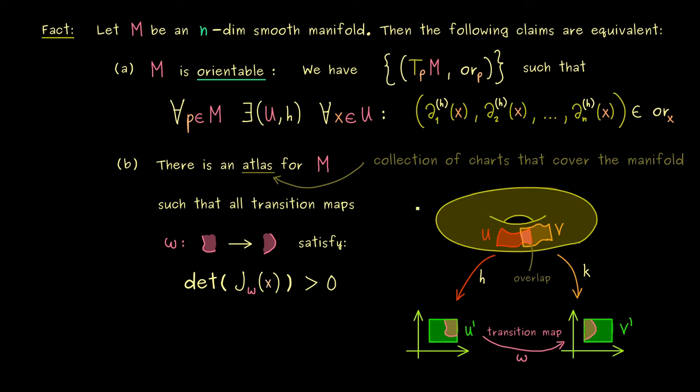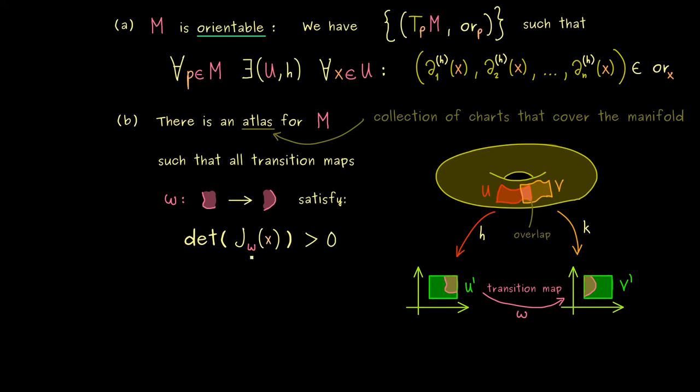And since we don't want to change the orientation, the determinant should be greater than zero. So this is the whole claim. And I said it's a simpler description, because we only deal here on the lower level. We only deal in R^n. And this might be easier to understand, because we don't have to go to the abstract tangent space.